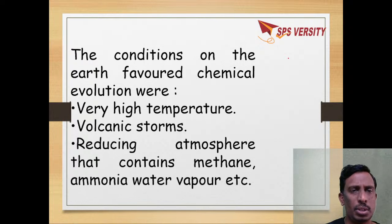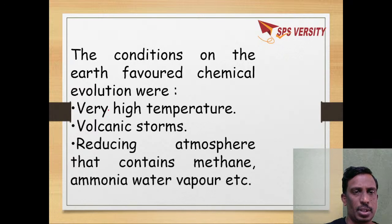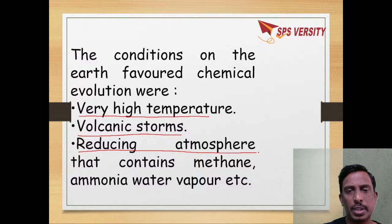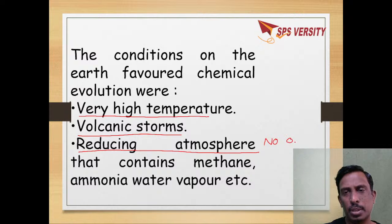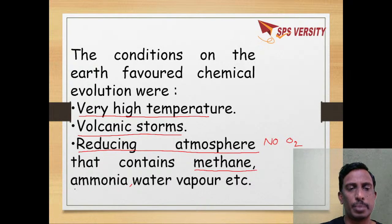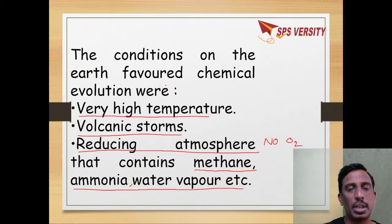What conditions favored chemical evolution? Very high temperature, volcanic storms, and the reducing atmosphere where there is no oxygen — only carbon dioxide, methane, ammonia, and water vapor. These conditions favored chemical evolution.